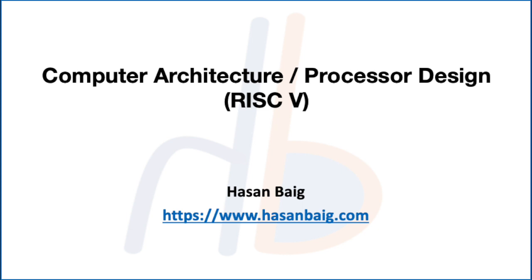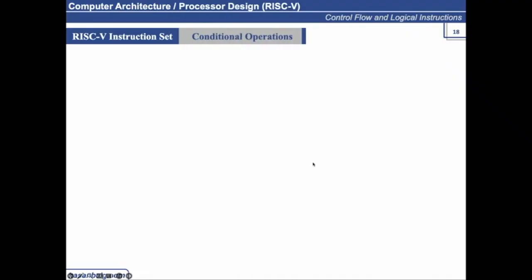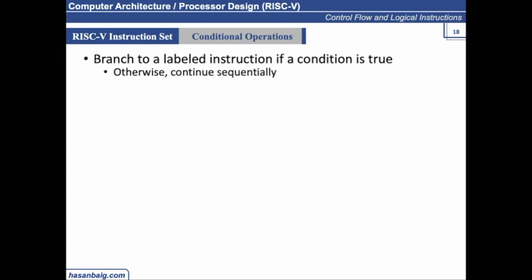Let's talk about conditional operations. How do we perform conditional operations? What is the conditional structure in the programming language that you're aware of? Like in Python, the if-else structure, which takes the decision and then moves accordingly. Conditional operations help us move or execute a certain piece of code — we generally refer to these as branch instructions.